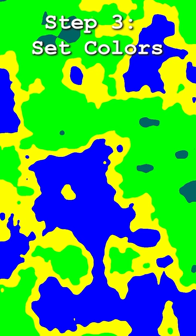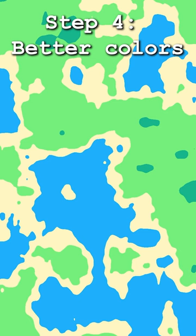Then add better colors — these ones I pulled from Anime Island Art. Next, add color gradients for each terrain type.